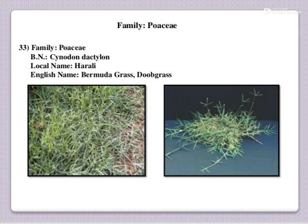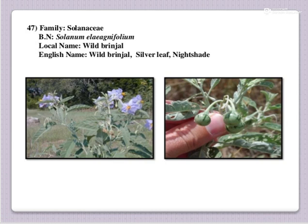The first is Hariyali. Common name is Hariyali and botanical name is Cynodon dactylon. English name is Garbuda grass or Dubo grass, under the family Poaceae. This is the Hariyali and the propagation of this weed is through runners. It is a very fast growing weed and commonly present all over the field.